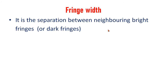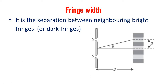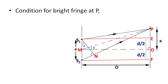Fringe width is the separation between neighboring bright fringes or neighboring dark fringes — that is, the separation between dark fringe and dark fringe. It is represented by beta. Here the source is S1, this is source S2, and this is the distance of separation D. This diagram was already discussed in the previous section.